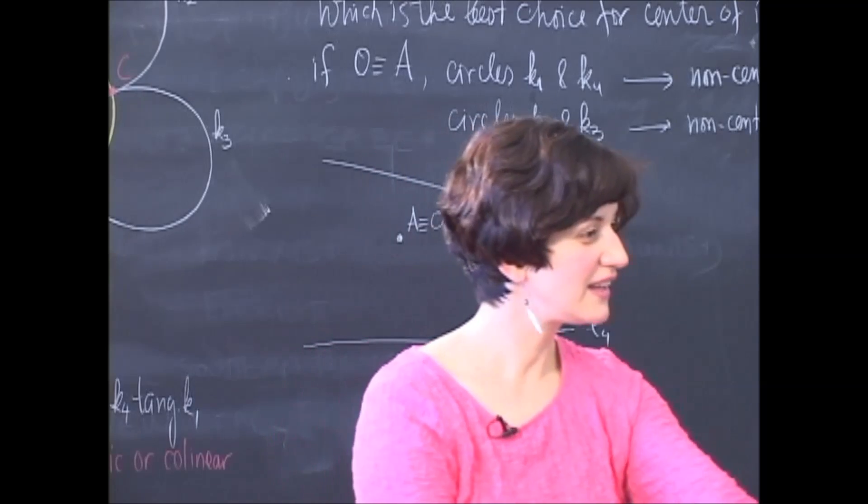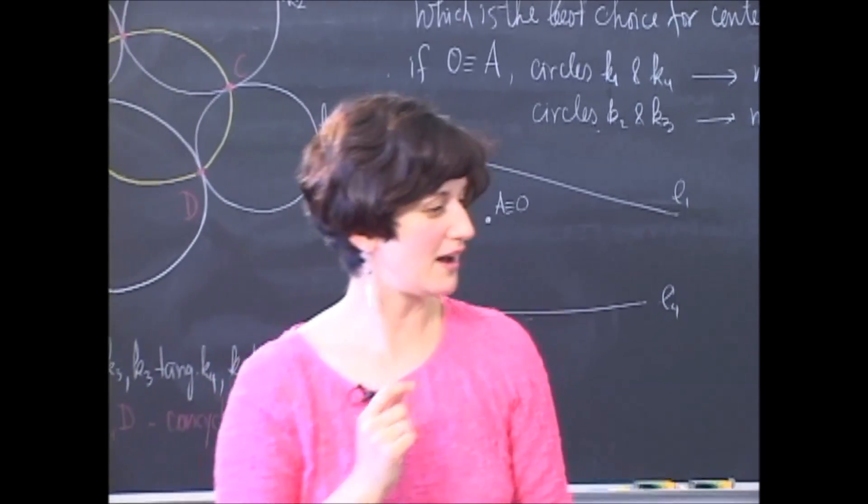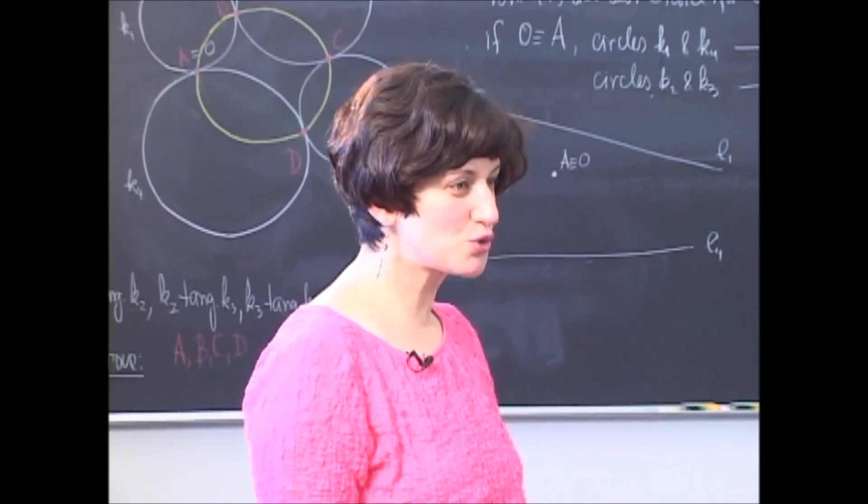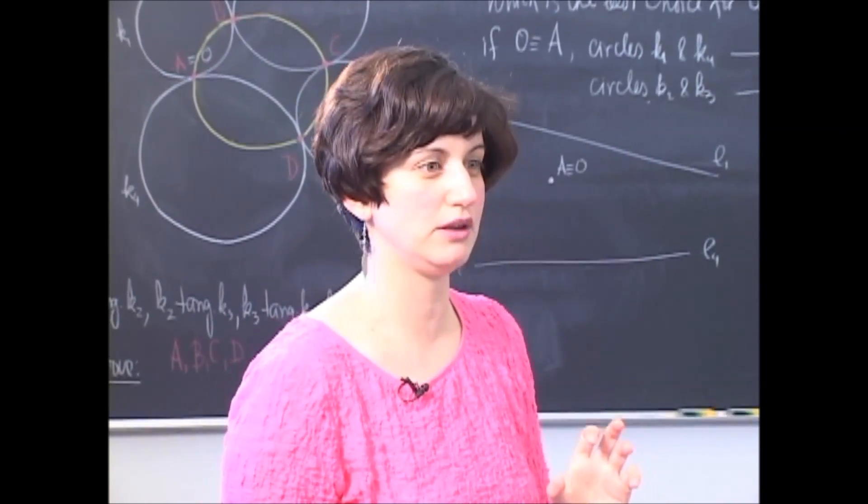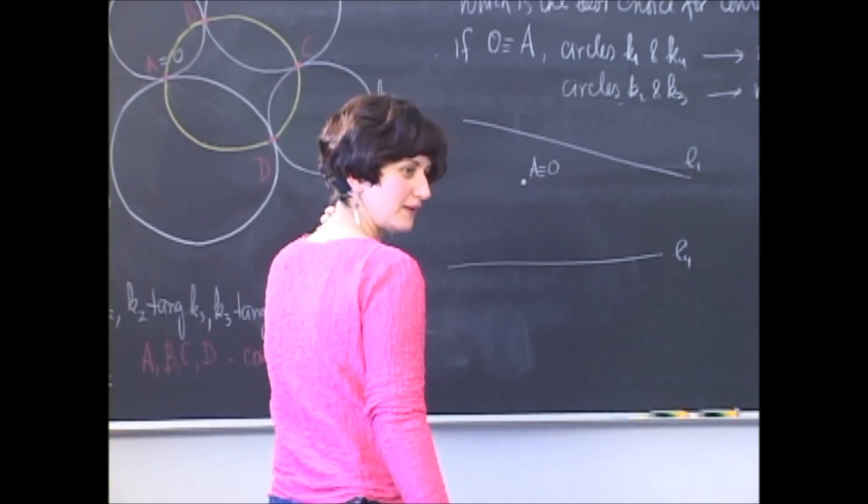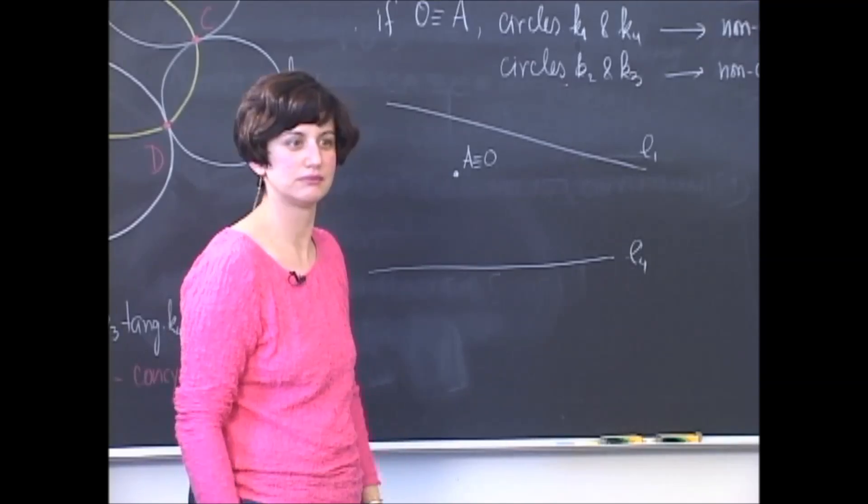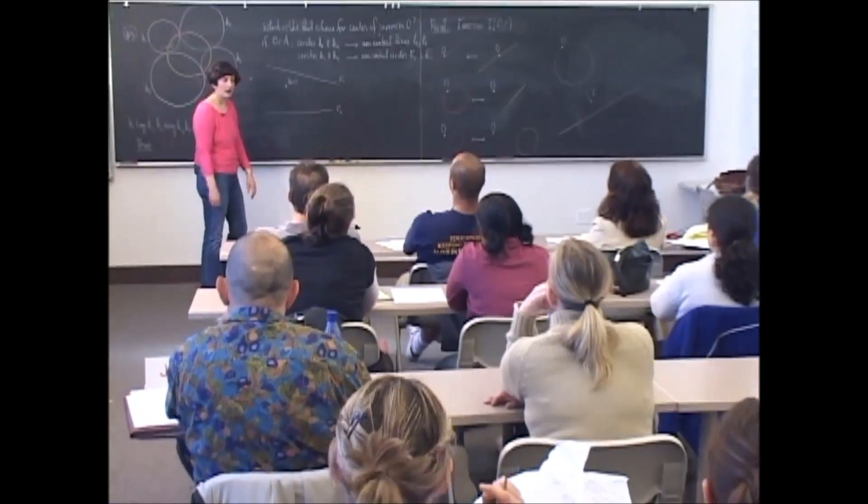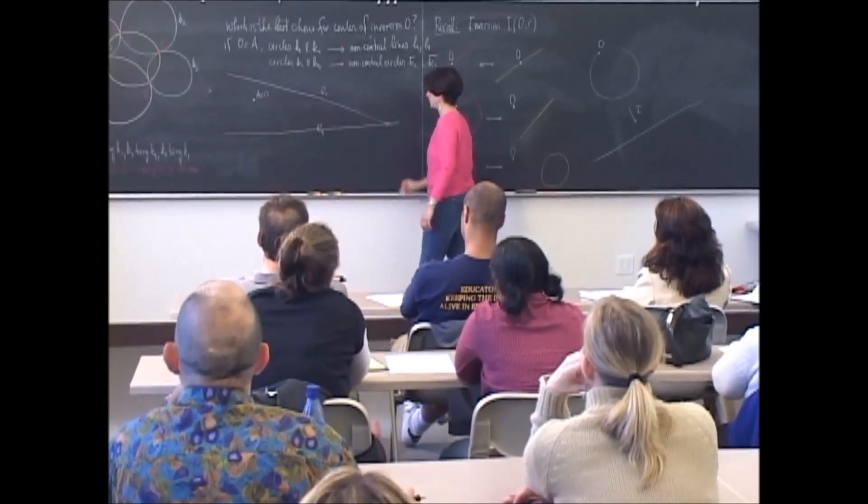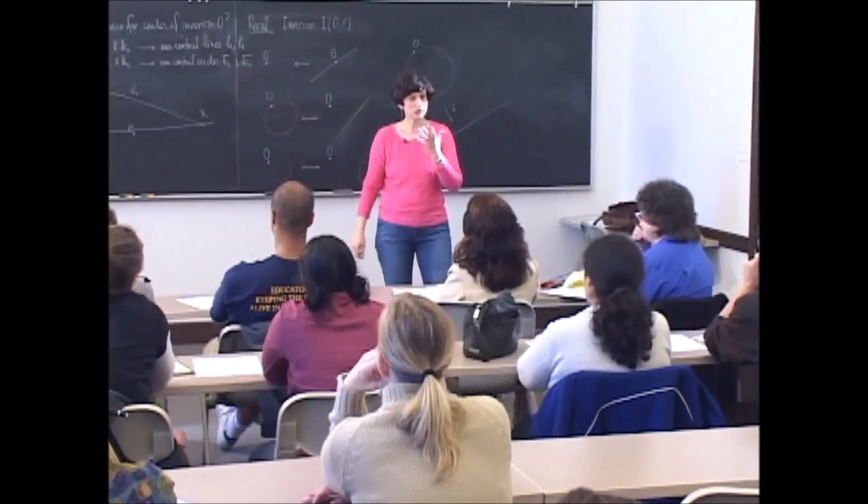Should the lines perhaps wind up being parallel? Should they? Let me repeat. So Mike suggests that these two lines actually should be parallel in our new picture. Why is that? What bothers you with this situation if they are not parallel? So argue by contradiction. They would cross each other. So let me cross them. Let's call this point X.